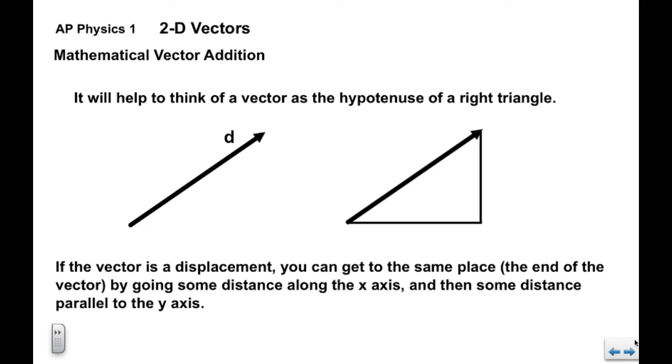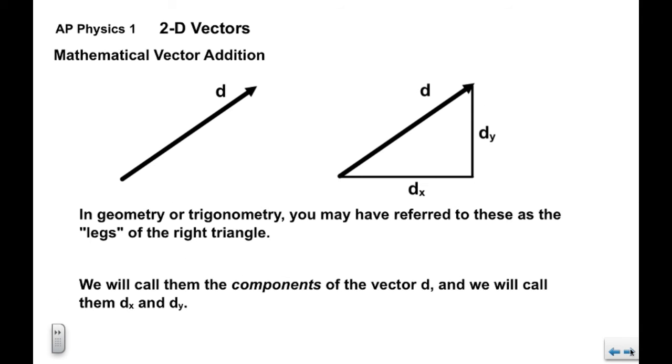Now in geometry and trigonometry, you may have referred to these as legs of a right triangle. We're going to call them components of the vector. We're going to call them respectively d sub x for the horizontal component and d sub y for the vertical component.